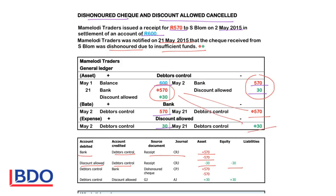On the day that the cheque is dishonoured, the debtor's control account will be debited and the bank account will be credited, so that the debtors owe us the 570 again, increasing assets. You don't have the money in the bank anymore, so you decrease assets with 570. The source document will be the dishonoured cheque. When you receive the money you recorded it in the cash receipts journal. If the cheque is dishonoured you will record it in the cash payments journal. You will also have to cancel the discount.